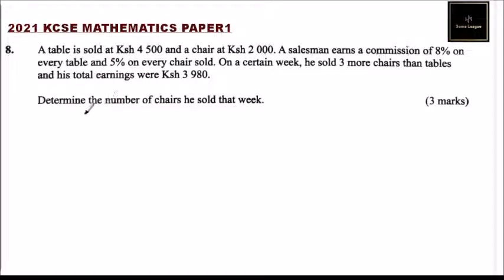Question number 8: A table is sold at Ksh 4,500 and a chair at Ksh 2,000. A salesman earns a commission of 8% on every table and 5% on every chair sold. On a certain week, he sold 3 more chairs than tables and his total earnings were Ksh 3,980. Determine the number of chairs he sold that week.